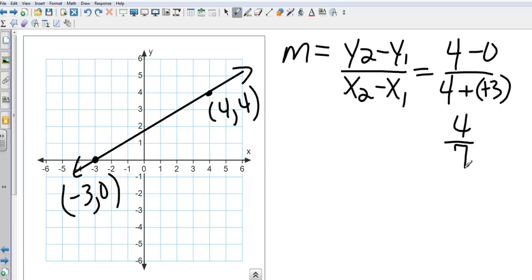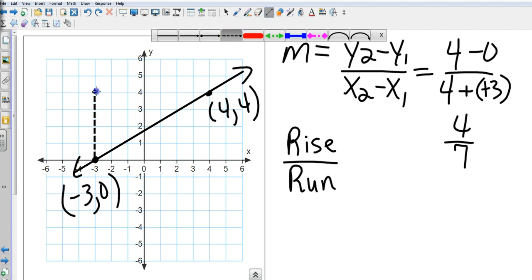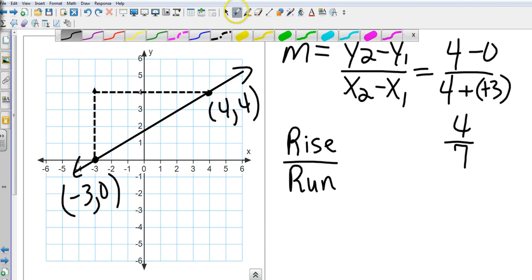Well, rate of change is also known as rise over run, which slope is as well. And so how many spaces do I rise and how many spaces do I run to get from point to point? Well, here I rose 1, 2, 3, 4 spaces. And here I ran 7 spaces, which gives me the exact same answer. So you can do it either way. Use the formula or take the rise over run directly off the graph.